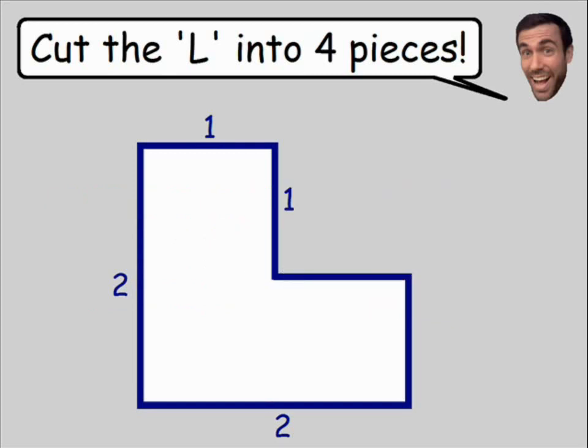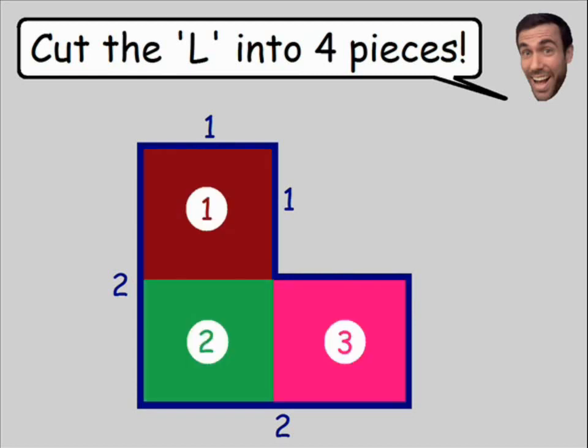Now this problem would be quite simple if we had to cut this L into three pieces. Notice how we can divide this L into three squares of all the same size. But this problem becomes a little bit more difficult when we need to divide this shape into four pieces of all the same shape and the same size.